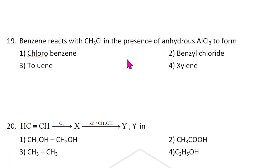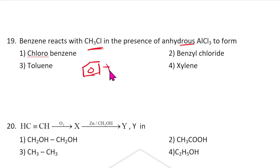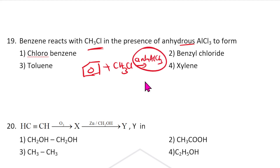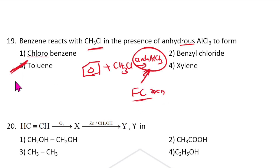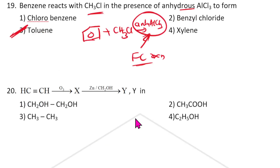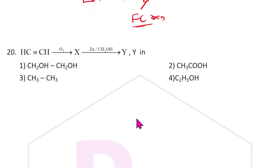Benzene reacts with CH3Cl in presence of anhydrous AlCl3 — this is a Friedel-Crafts alkylation reaction. The product formed is toluene. Answer is three.